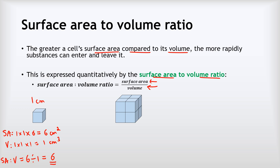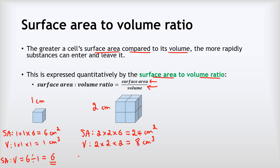For a slightly bigger cube with sides of two centimetres: the surface area is two multiplied by two, times six faces, giving 24 centimetres squared. The volume is two multiplied by two multiplied by two, giving eight centimetres cubed. So the surface area to volume ratio is 24 divided by eight, giving a ratio of three.